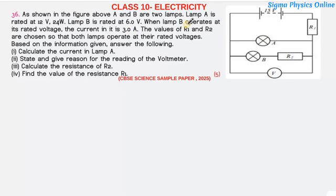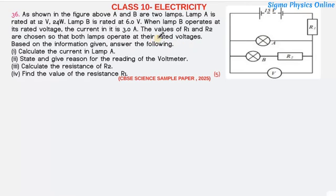As shown in the figure, A and B are two lamps. Lamp A is rated at 12 volt, 24 watt. Lamp B is rated at 6 volt. When lamp B operates at its rated voltage, the current in it is 3 ampere.